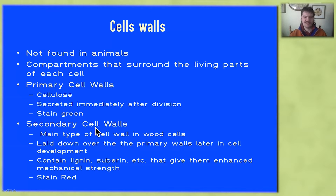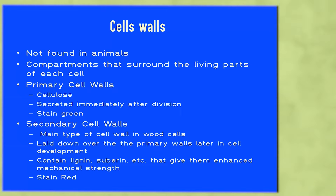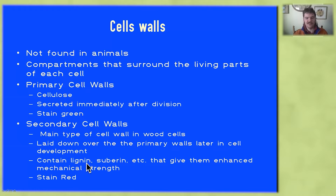Next, we have secondary cell walls, and this is the main type of cell walls found in wood cells. These are laid down over the primary cell walls later in the development of the cell. Because they're found in wood cells, they are the primary things that give plants mechanical strength. To do that, they contain different polymers including lignin and suberin, etc. This is what imparts that strength on the secondary cell walls, and these will stain red with that saffron.